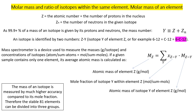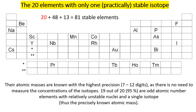That is why we need to consider the 81 stable elements in three different groups. Those three groups contain 20 plus 48 plus 13 elements — altogether 81 stable elements. In the first group, we have 20 elements that each have only a single isotope. This is a very lucky situation because we don't need to worry about inaccuracy in measuring isotope concentration, and atomic masses of these 20 elements are known with the highest precision — from 7 to 12 digits for different elements.